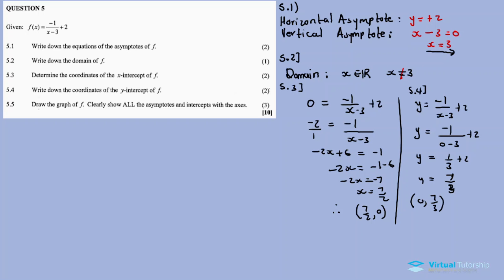5.5: draw the graph of F, clearly show all the asymptotes and the intercepts with the axes. The asymptotes are calculated, the intercepts are calculated, so now it's time to plot the function.